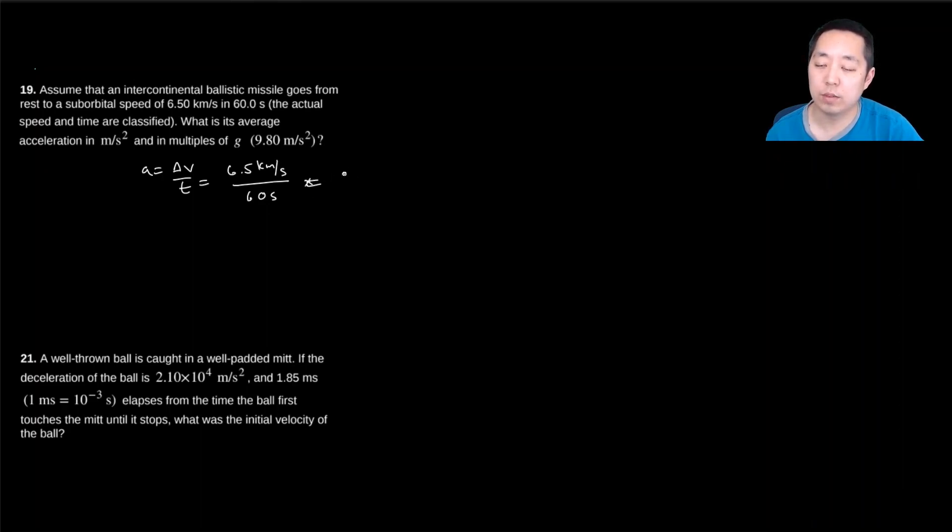or I don't have to multiply, I guess it's 6,500 meters per second in 60 seconds. So that's 6,500 divided by 60, and I get 108.3 meters per second squared.